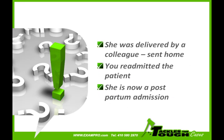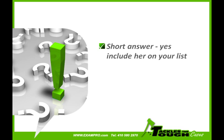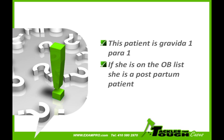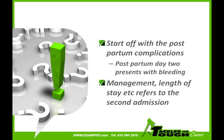She was delivered. Let me make sure I understand — she was delivered by a colleague and sent home, and then you readmitted the patient; she's now a postpartum admission. The short answer is yes, you do need to include her on your list. Think about it this way: all the other patients, when you see them for the first time, will be in the antepartum or pre-delivered state — for example, a gravida 1 para 0. This patient, when you start entering her, you make her a gravida 1 para 1, which immediately tells us she's a postpartum patient on the OB list. You start off with the postpartum complication — for example, postpartum day 2 presenting with bleeding — and then the management and length of stay for that second admission.